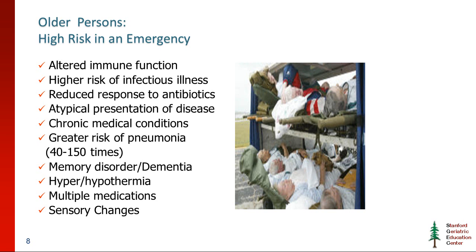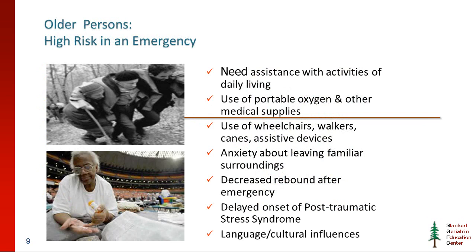Polypharmacy is a concern. The typical medication usage for older persons living in the community can be 10 to 12 different medications a day. For the nursing facility population, it could be anywhere from 12 to 18 to 20. Older persons are also at higher risk due to impairment with activities of daily living. Many are oxygen dependent and dependent on assistive devices such as wheelchairs, eyeglasses, hearing aids, and walkers or canes.